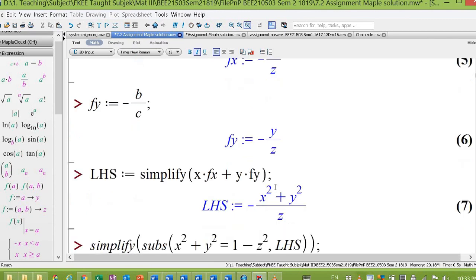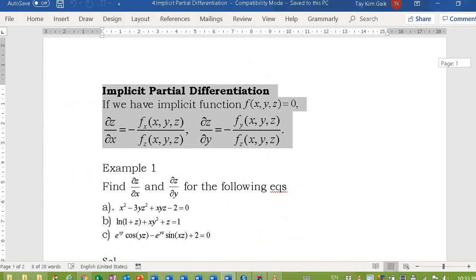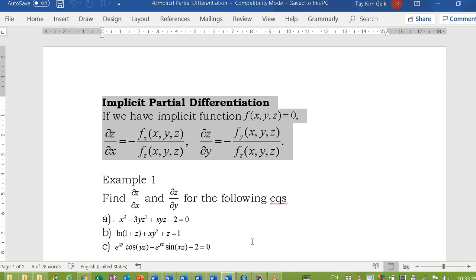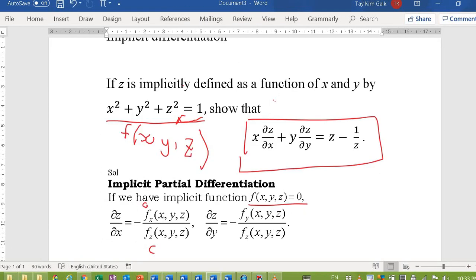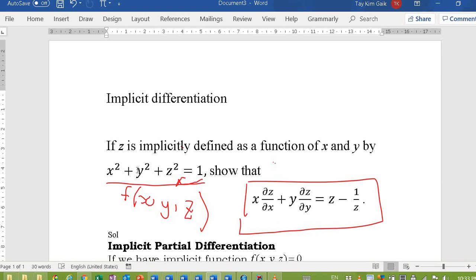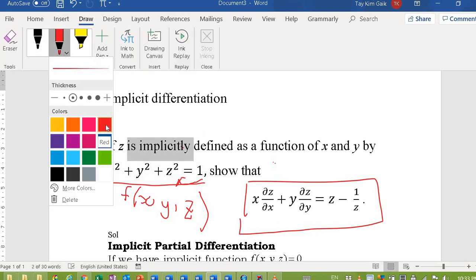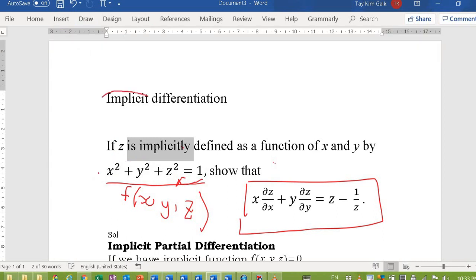We get -(x² + y²)/z. Notice that from the equation, x² + y² is actually 1 - z², bringing z² to the other side.